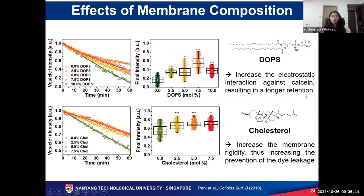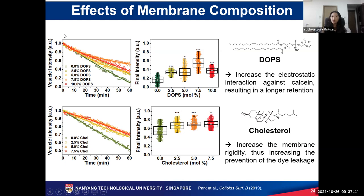Membrane composition also affects results significantly. Since calcein dye is negatively charged, DOPS — which is also negatively charged — can cause electrostatic interactions that retain calcein inside the vesicle longer. Cholesterol can also be incorporated; it is generally known to make membranes more rigid, which also reduces dye leakage. Therefore, when changing membrane composition, it is essential to establish a basic standard baseline in order to compare interactions properly.